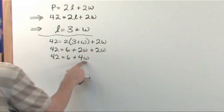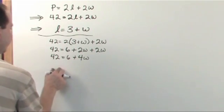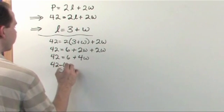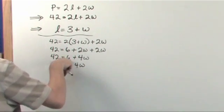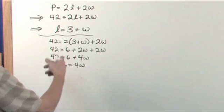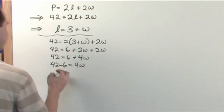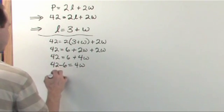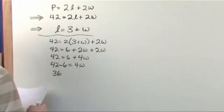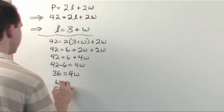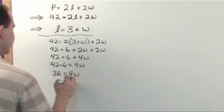And now in order to solve for W I need to get it by itself so I'm going to take the 6 and I'm going to move it over. So I'm going to have 42 minus 6 because I'm going to subtract 6 from both sides. On the right it disappears because 6 minus 6 is 0 and on the left you're just subtracting here. Now 42 minus 6 is 36. And that's equal to 4W. And so W, just divide both sides by 4 to get rid of.